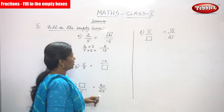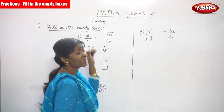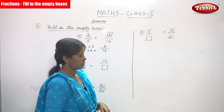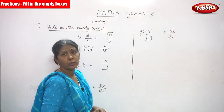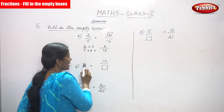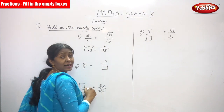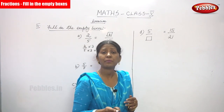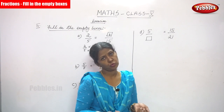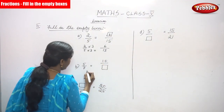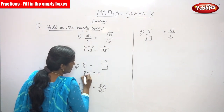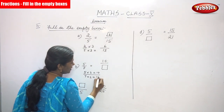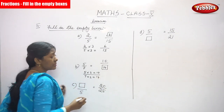2 by 5 equals 6 by 15 — that is an equivalent fraction. For 5 by 7 equals 10 by what, the numerator in the first fraction is 5 and in the next fraction it is 10. So 5 is multiplied by which number? 5 multiplied by 2 gives 10, so the multiple is 2. If the numerator is multiplied by 2, the denominator is also multiplied by 2. So 7 into 2 gives 14.